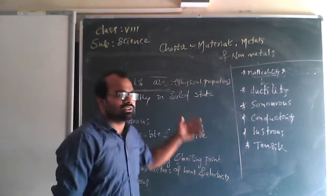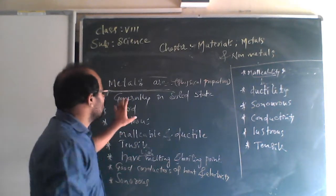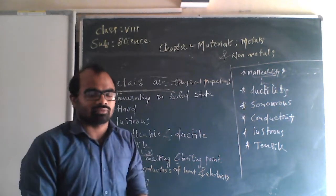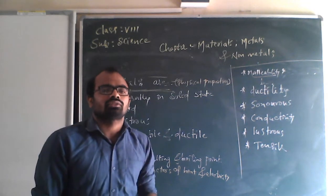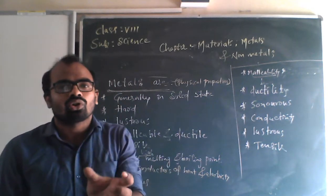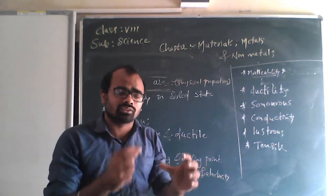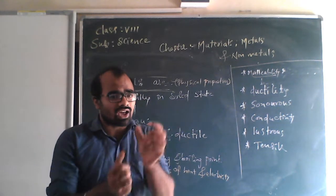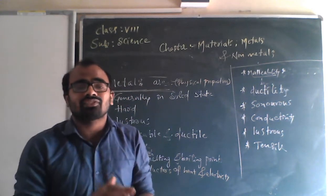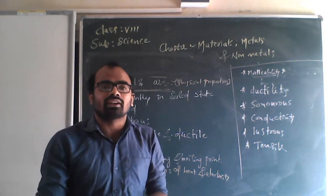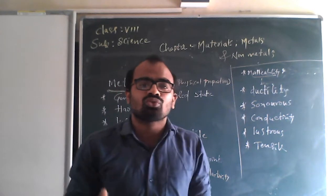Except mercury, all metals are in solid state. The second property: metals are hard. When you touch gold or iron or silver, you will feel the hardness of the metal — it is not soft. The third property: metals are lustrous, meaning they have a shiny surface.